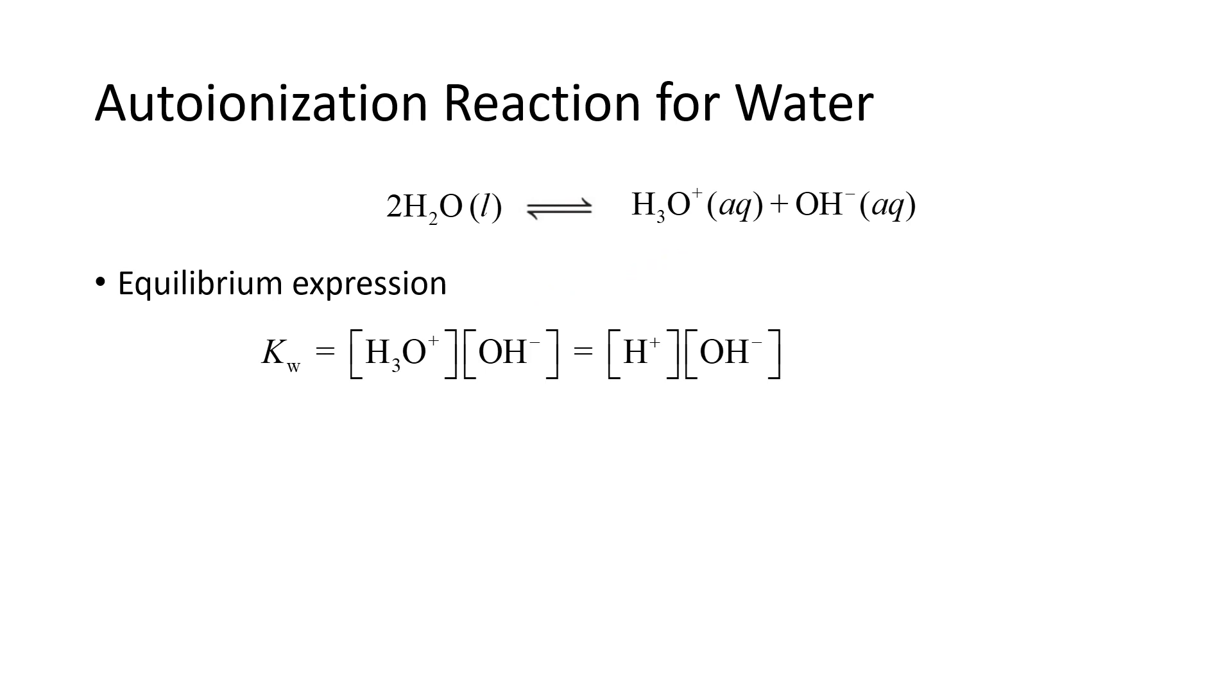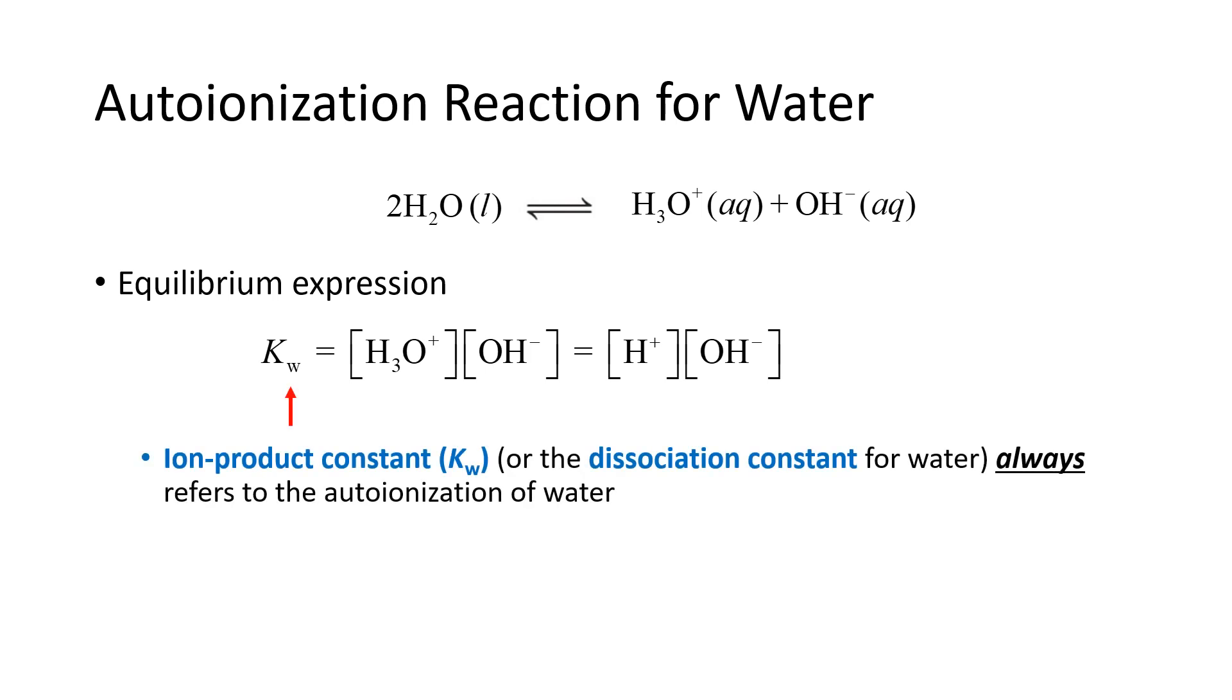The equilibrium expression for the autoionization of water is Kw. It is also called the ion product constant, or the dissociation constant for water, and always refers to the autoionization of water.